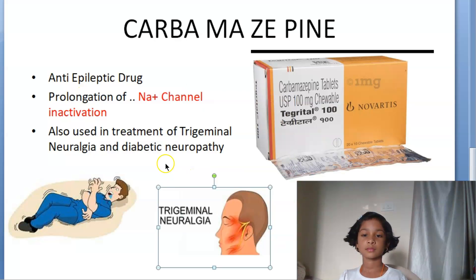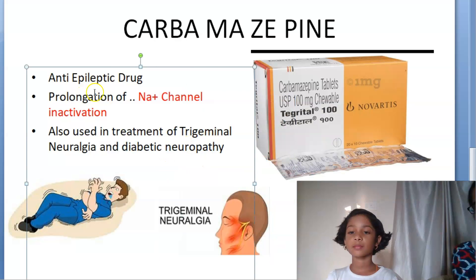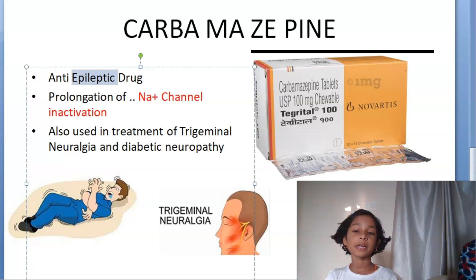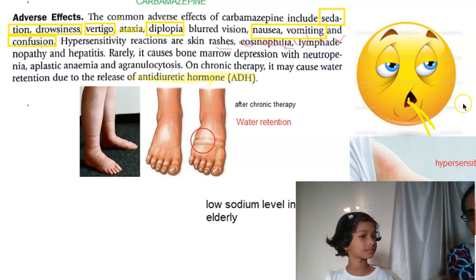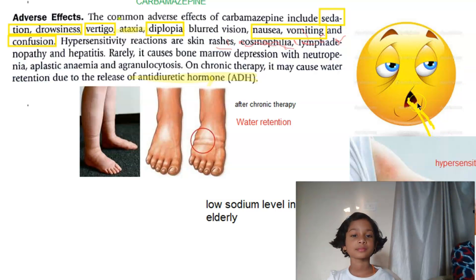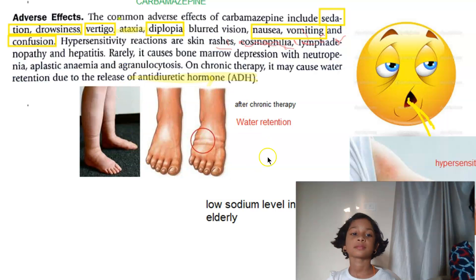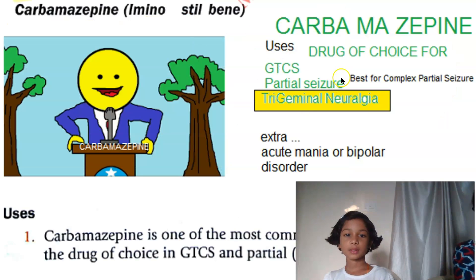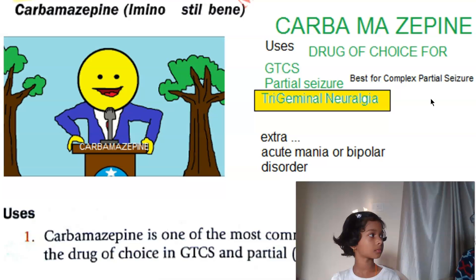They will also give it for diabetic neuropathy. So remember: carbamazepine is used for epilepsy and face pain, and it can cause drowsiness, sedation, nausea, and vomiting. It can also cause sodium retention, so water gets retained and the patient will have edema. Carbamazepine is used to treat generalized tonic-clonic seizures and even partial seizures.